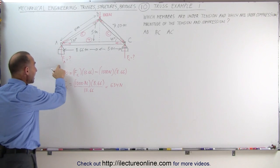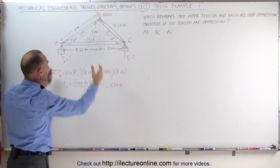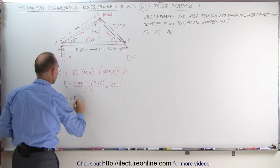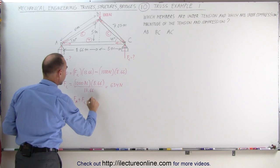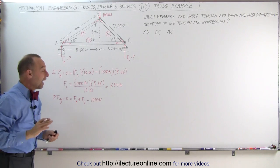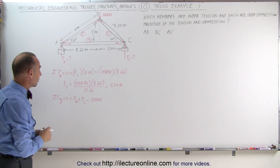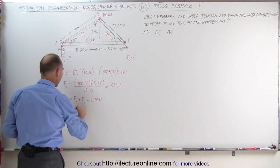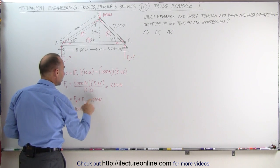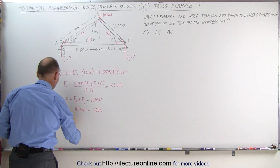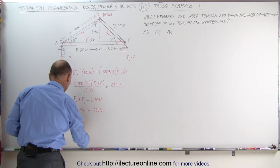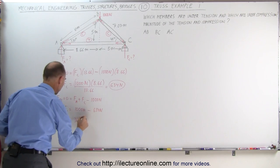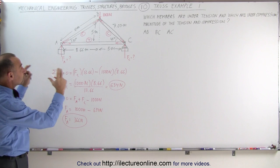To find the force at A, we note there are three forces acting in the vertical direction. The sum of forces in the y-direction must equal zero: F sub A plus F sub C minus 1,000 newtons equals zero. Remember that members are assumed to have no mass, so there's no weight contribution from them. Since F sub C is 634 newtons, F sub A equals 1,000 minus 634, which is 366 newtons. Adding them gives 1,000 newtons, which confirms the result.